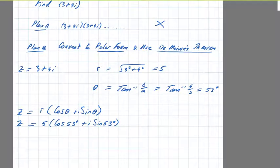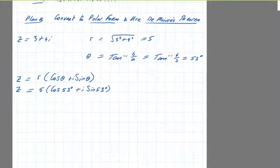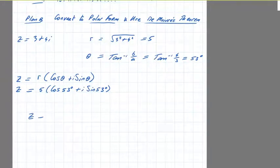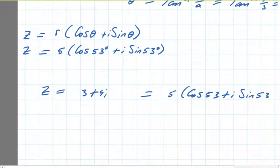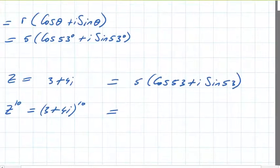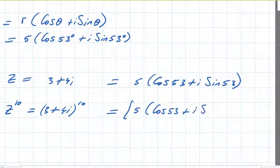Now, step 2 is use De Moivre's theorem to get rid of the power. Going back to our question, z is equal to 3 plus 4i, which is in polar form 5 cos 53 plus i sine 53. However, z to the power of 10 is what we're looking for. Z to the power of 10 is 3 plus 4i to the power of 10. Well, that's the right-hand side to the power of 10 also. It's 5 into cos 53 plus i sine 53, and that's to the power of 10.